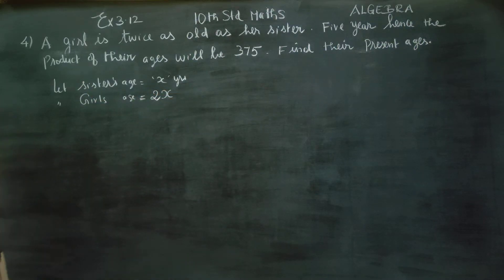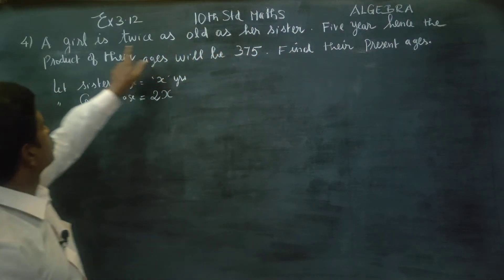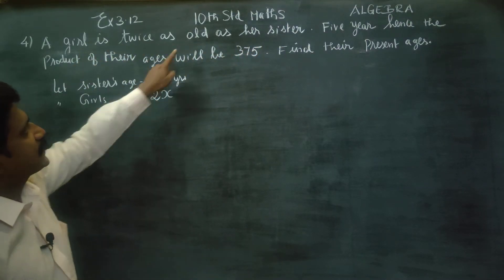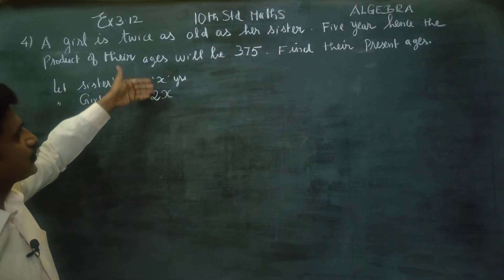Twice is equal to 2x. Sister age is x. Girl age is twice, as old as her sister. So it's 2 times x.